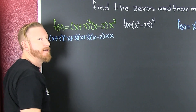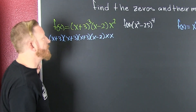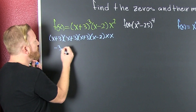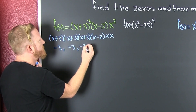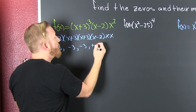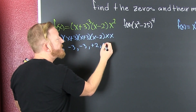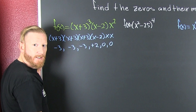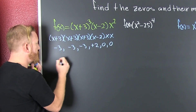Now that we have it all written out we can find the zeros. The zero here is -3, the zero here is -3, the zero here is -3, and then this one is +2. The zero there is zero, and the zero there is zero. So we can go and write their multiplicities.